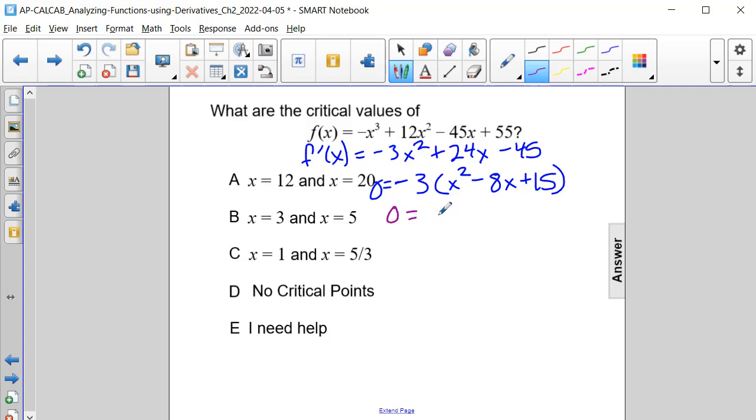So we now have that zero is equal to negative 3 times x minus 3, x minus 5.